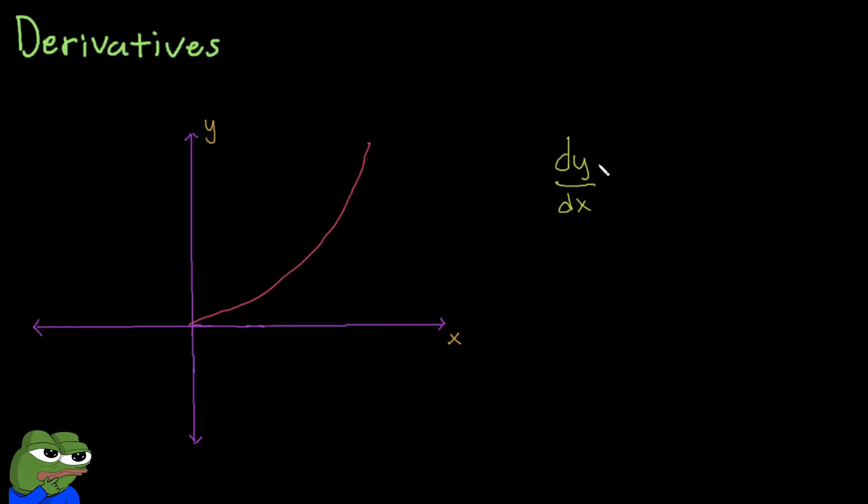These variables can change, of course, but in this case, the y is our vertical axis and the x is our horizontal axis. This notation is called the Leibniz notation.